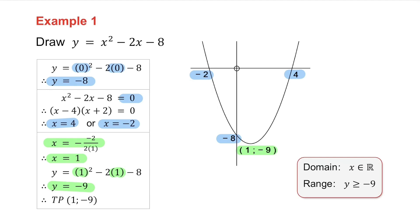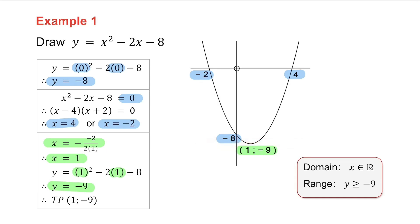To get the domain of the graph, x can be anything, so we write it as x is an element of R. To get the range, minus 9 is the lowest the graph will ever be, so the range is y greater than or equal to minus 9.